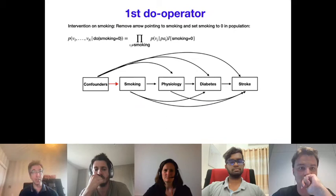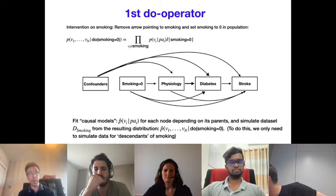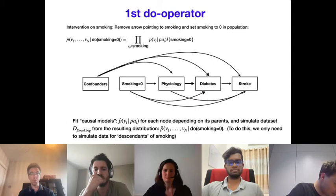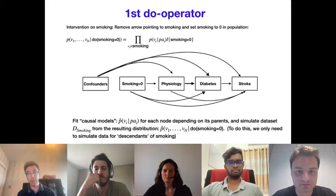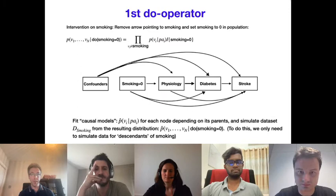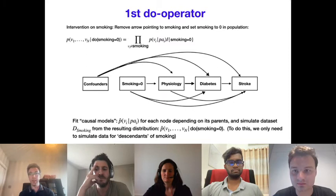You first simulate physiology variables assuming smoking equals zero, then simulate diabetes and other preclinical disease variables, and so on. This is an abridged causal graph with some variables stripped out. You then apply a second do-operator on the dataset assuming smoking has been eliminated: this removes the arrows into diabetes and simulates only the descendants of diabetes — in this case, stroke. This approach generalizes to arbitrarily complex causal graphs and joint interventions on many variables.